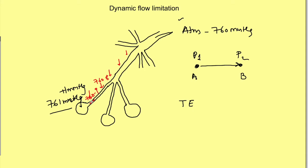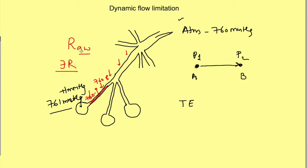Inside the airways, pressure is decreasing as air moves towards the mouth. This drop in pressure is due to frictional resistance to flow, because air molecules are colliding with the airway walls. This is known as Raw — airway resistance — and its value is approximately less than 2 centimeters of water per liter per second.